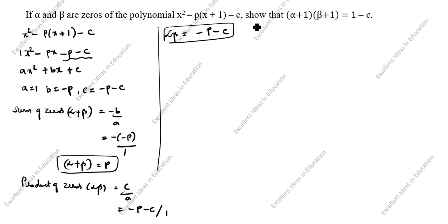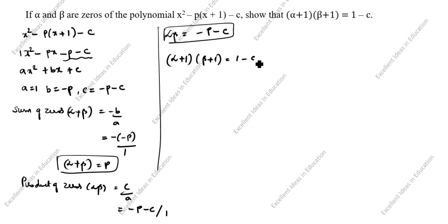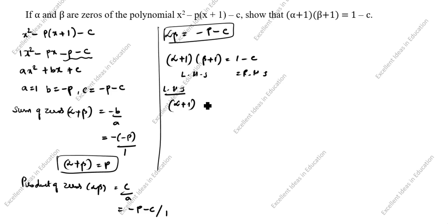Next we will prove this. What is given in this question? (alpha plus 1)(beta plus 1) equals 1 minus c. We will take this as LHS and this as RHS. First we will take LHS. What is given as LHS? Alpha plus 1 into beta plus 1.